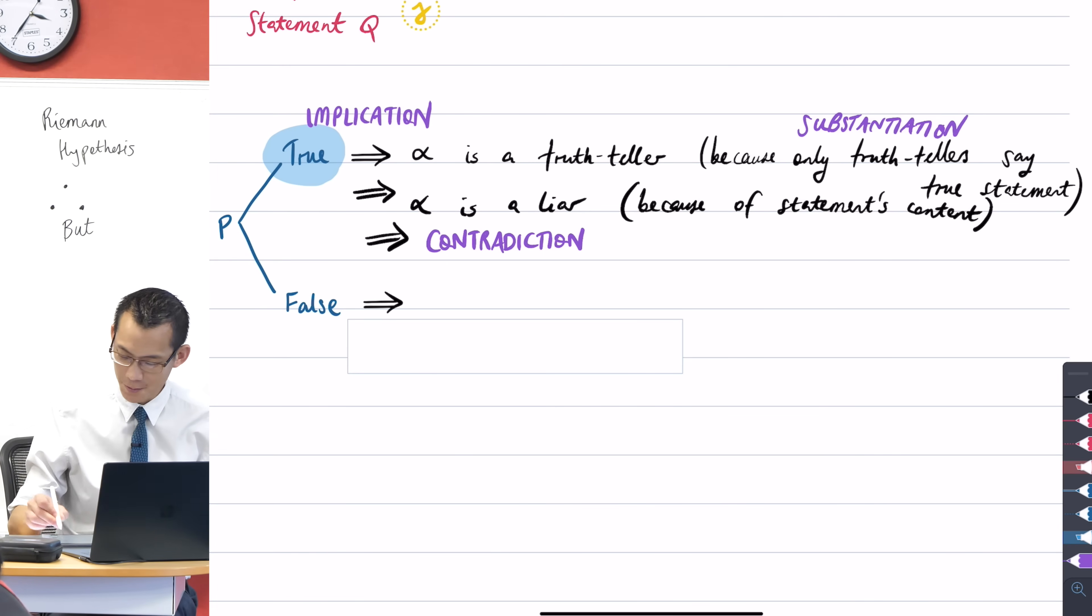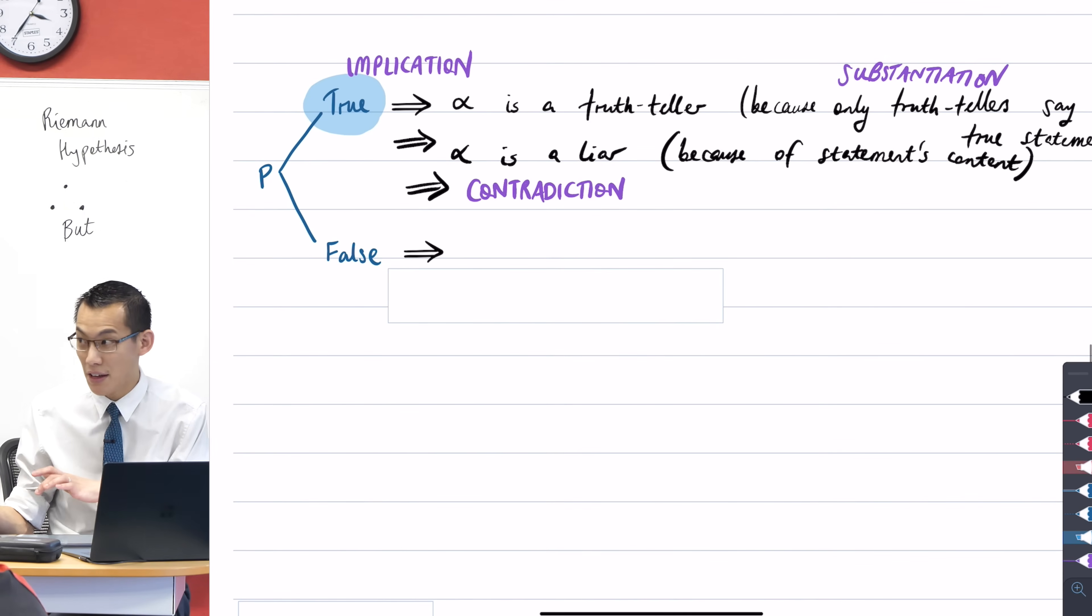Okay, so now we sort of go further down and we say, well, if it can't be true, then the opposite must be true. So if P is false, then what can we say about alpha? Alpha is a liar.